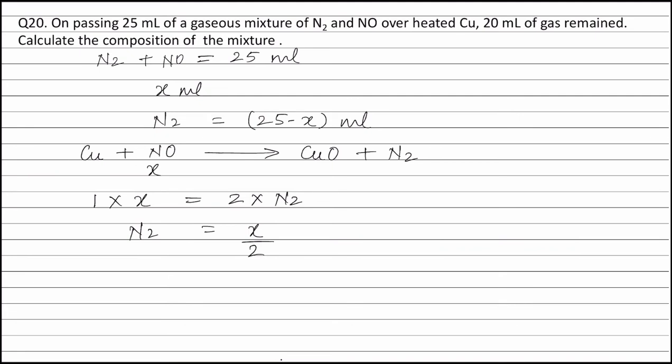At the end of the reaction, only nitrogen gas is present, whose volume is given as 20 ml. Therefore, the total volume of nitrogen at the end of the reaction is the volume of nitrogen originally present (25 - x ml) plus the volume of nitrogen formed from nitric oxide (x/2 ml), and this equals 20 ml.